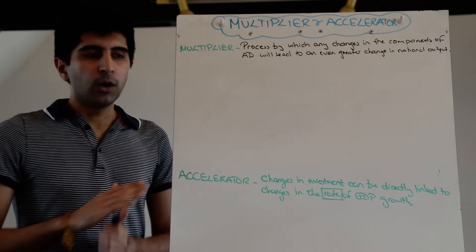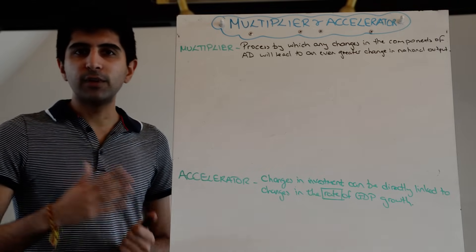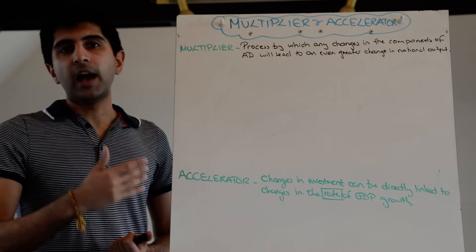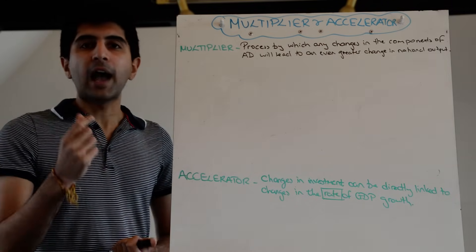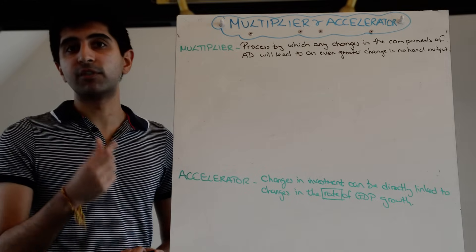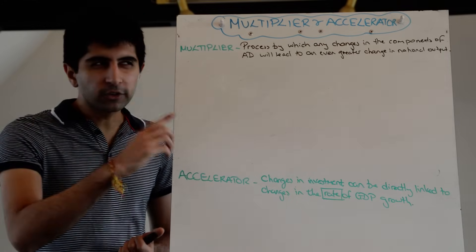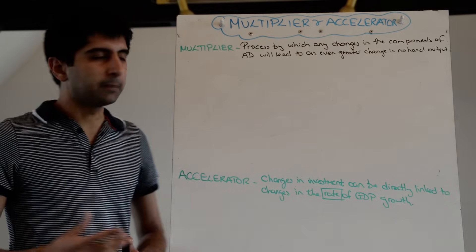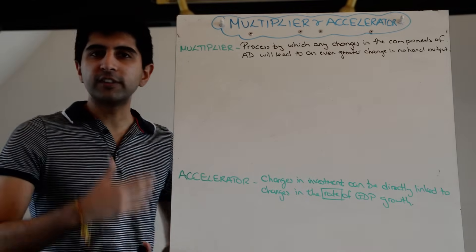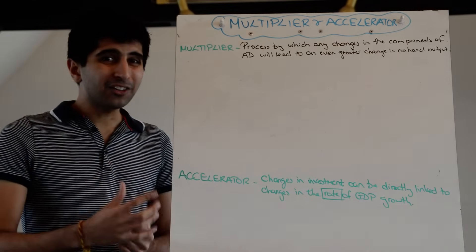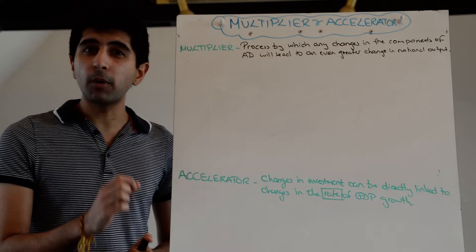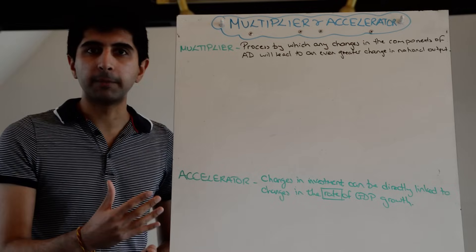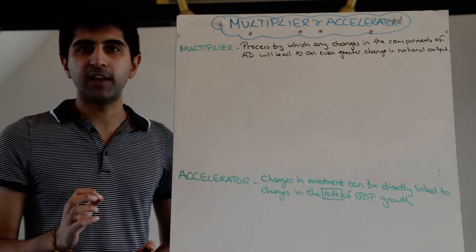Very simply, we've learnt so far that any increase in AD will shift aggregate demand to the right and increase national output from Y1 to Y2, so growth will increase on our diagram. The multiplier effect goes one stage further and says that the actual effect on growth will not stop at Y2 — there will be a further increase in growth as well. That is the multiplier effect.